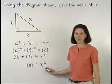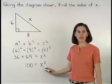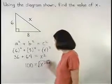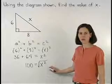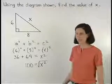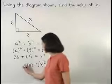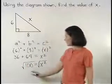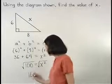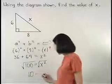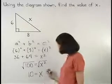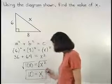Now to get x by itself, since x is being squared, we must take the square root of x, and if we take the square root of the right side of the equation, we must also take the square root of the left side of the equation. On the left, the square root of 100 is 10, and on the right, the square root of x squared is x. So our answer is 10 equals x.